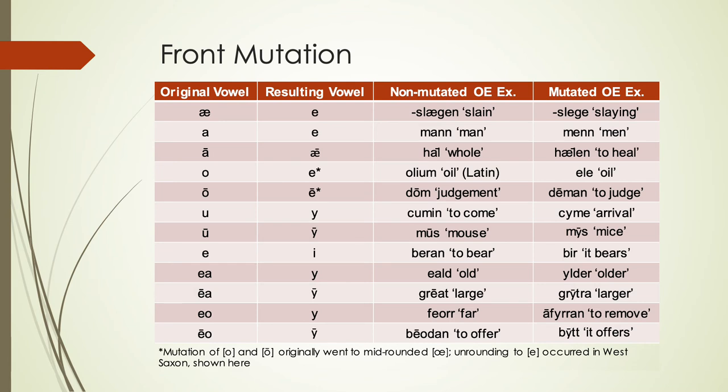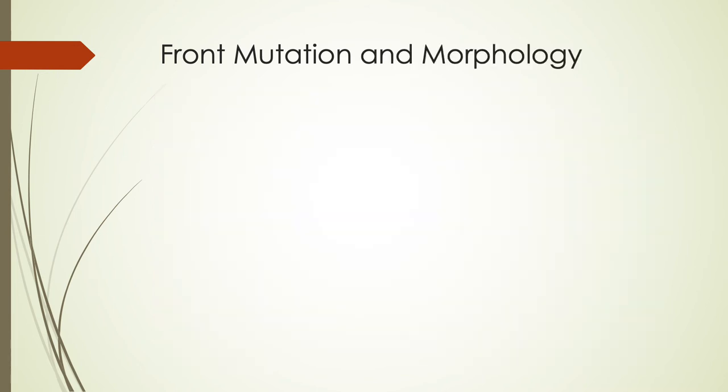And then the other diphthongs — things like 'beodan' meaning to offer versus 'bytt' meaning it offers — show this mutation as a result of some inflectional morphology. Because of this change, it had a really big effect on the morphology in Old English, which we'll focus on in the next lecture.